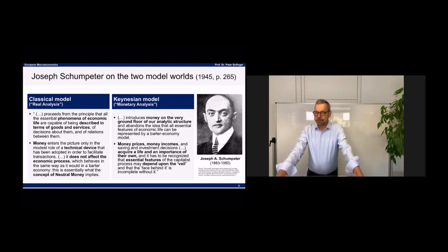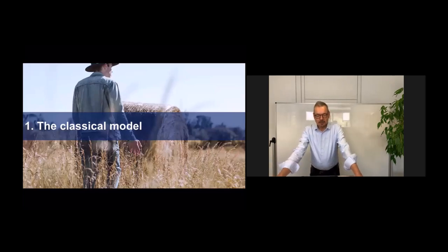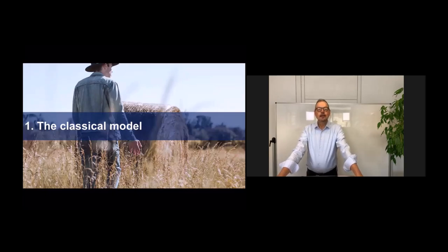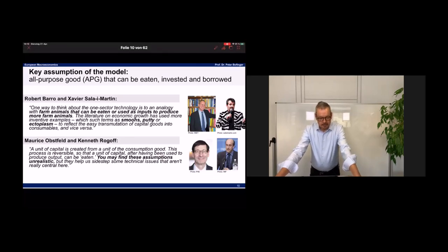From this basic introduction, we can now go into the details, starting with the classical model. It's the model for a wheat or corn economy — that's why we've chosen this picture. If you really want to understand the functioning of the classical model, the best way is to have in mind this kind of corn economy. The key assumption is this all-purpose good that can be eaten — which means consumed — invested, and also borrowed, so it can be used as a financial asset.